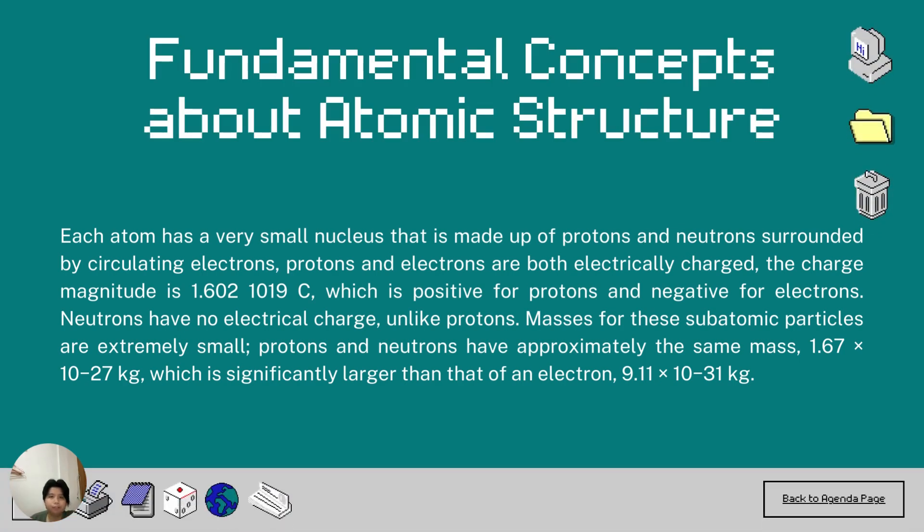For the fundamental concepts about atomic structure, each atom has a very small nucleus that is made up of protons and neutrons and it is surrounded by moving electrons. Protons and electrons are both electrically charged. Their charge magnitude is 1.602 times 10 to the -19, which is positive for protons and negative for electrons. In contrast to protons, neutrons have no electrical charge.